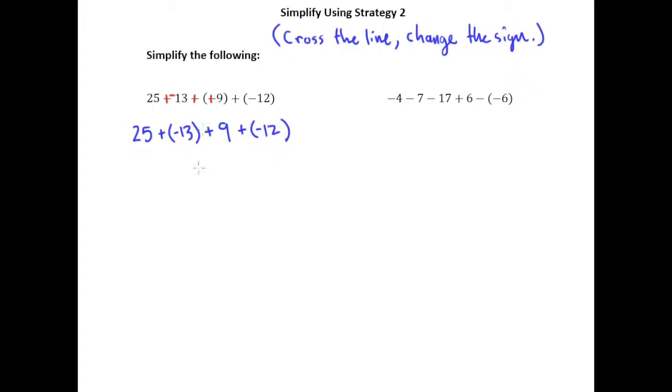And again, remember, using the commutative property of addition, we can put our positives next to each other and put our negatives next to each other. And so, of course, I can add 25 and 9 and get 34. So I have 34 as my positive, and I can add 13 and 12, which gives me 25.